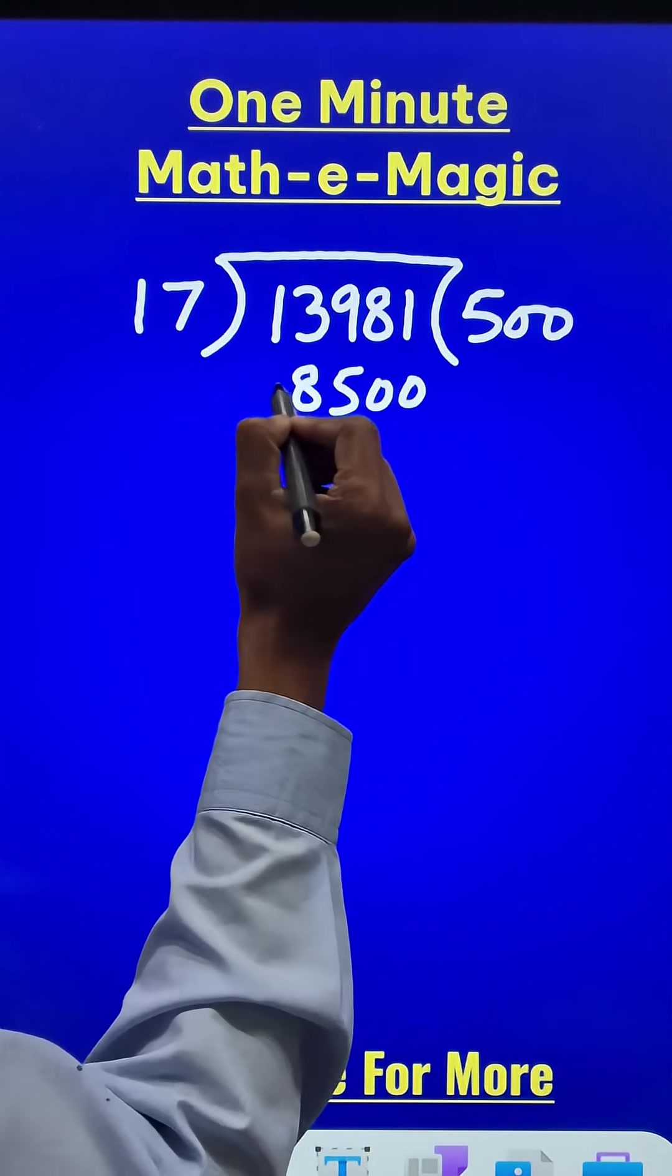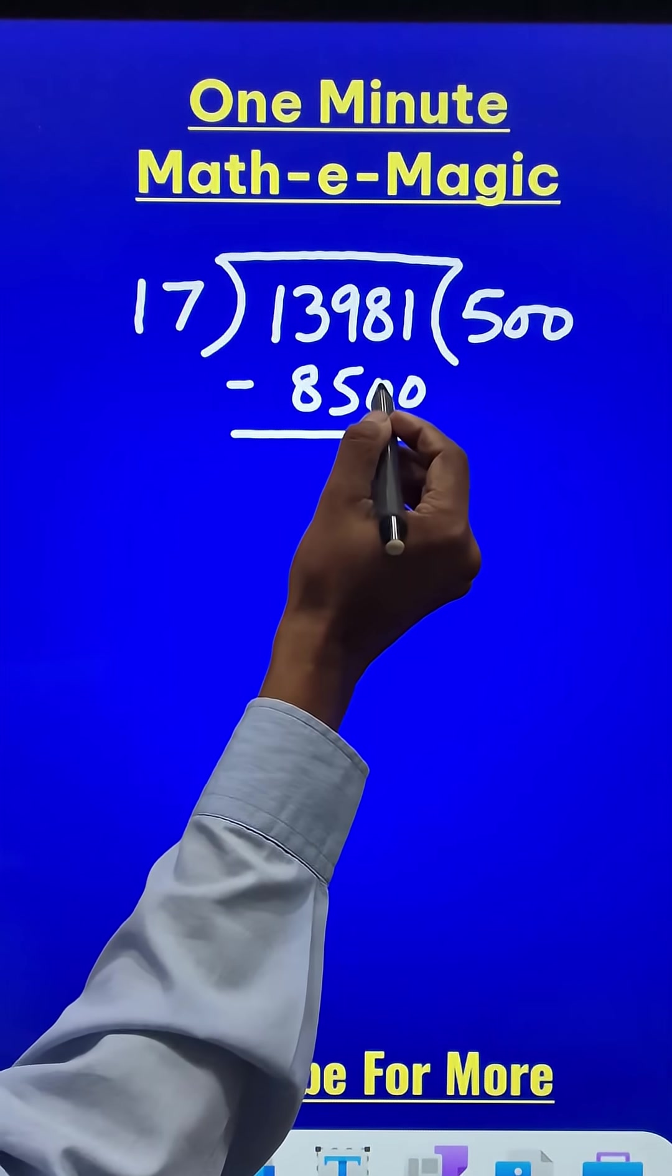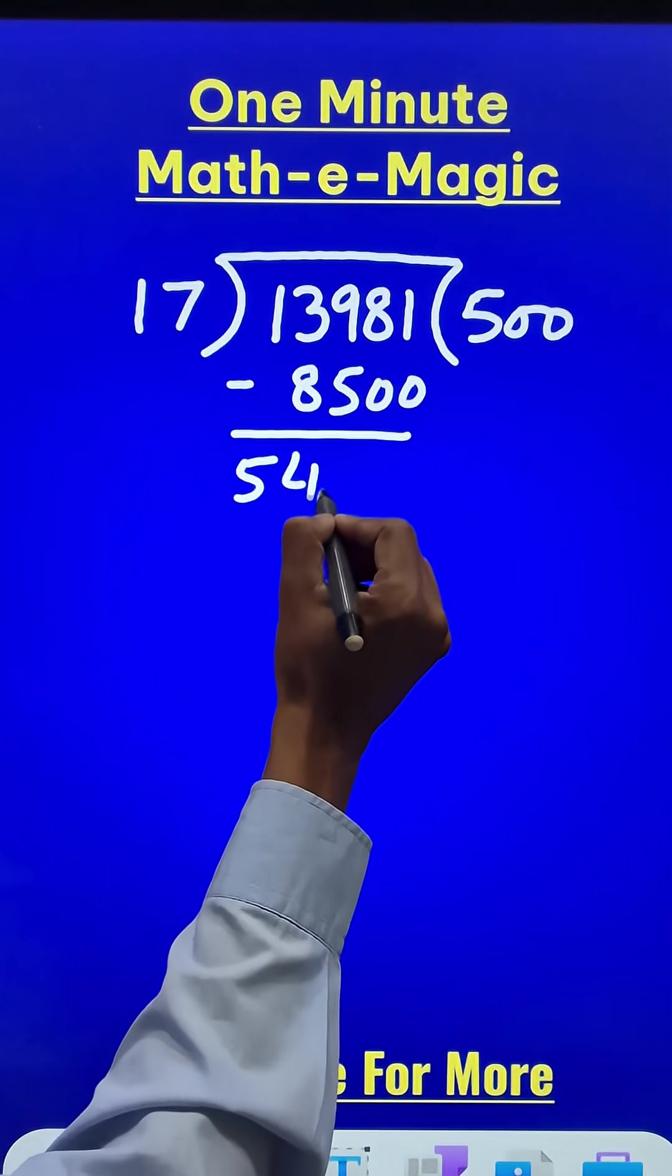So 8500 can be written here and then we will subtract 13981 and 8500. That will give you 5481.